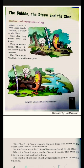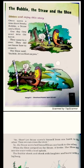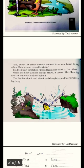So the straw stretched himself from one bank to the other. The Straw ne apne aap ko ek kinare se doosre kinare mein faila liya. When the shoe jumped on the straw, it broke. Jaise hi The Shoe ne Straw ke upar jump kiya, toh jo Straw tha woh toot gaya.